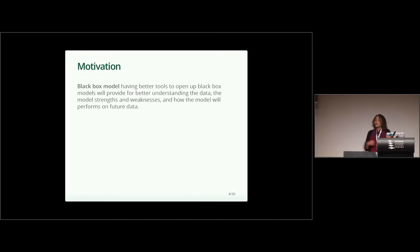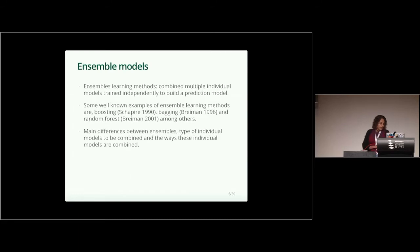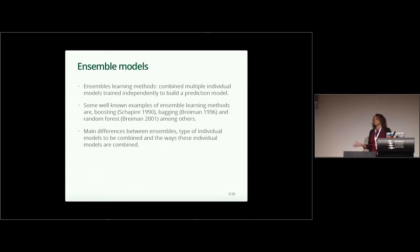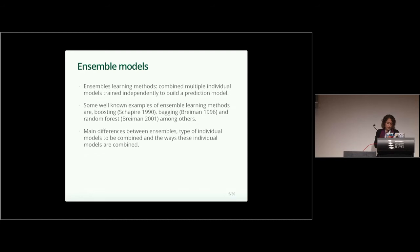With some of these tools, we can modify our model or go back and forth. In general, an ensemble learning method combines multiple individual models trained in an independent way, and at the end we are building a prediction model. Some very common and well-known ensemble learning methods are boosting, bagging, and random forest. The main difference between all these methods is the type of model we are combining and the way we combine these different individual models.